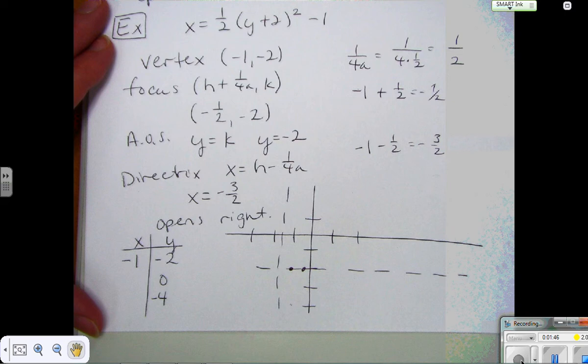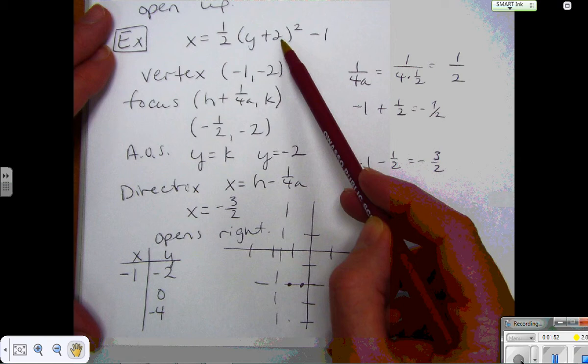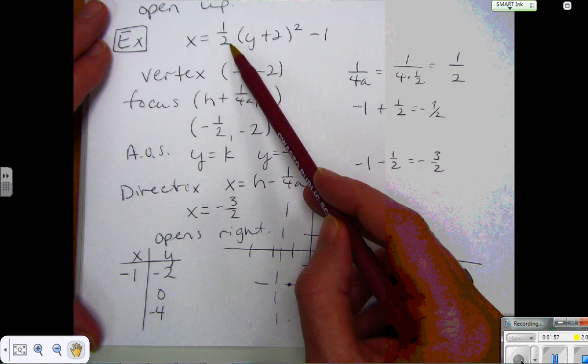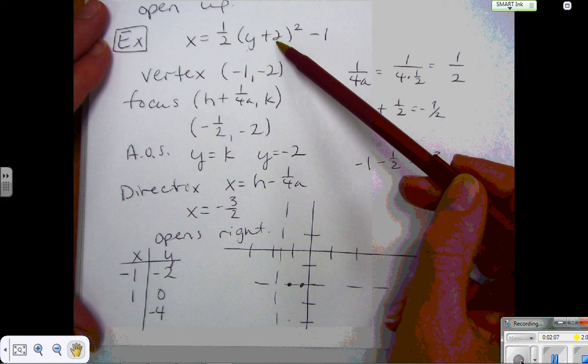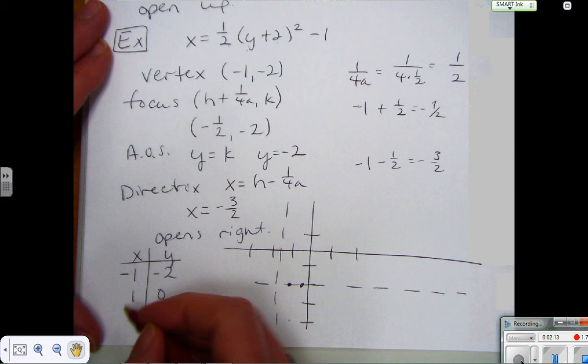Okay, when I plug a 0 in to the equation up here, 0 plus 2 is 2 and then square that is going to be 4. 4 times a half is 2 and then 2 minus 1 is going to be 1. And I should get the same value when I substitute that negative 4 in. Negative 4 plus 2 is negative 2, and when you square that it's going to be a positive 4, times a half is 2, 2 minus 1 is 1. So I have those two values I can plot.